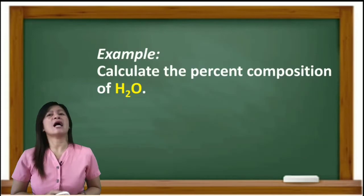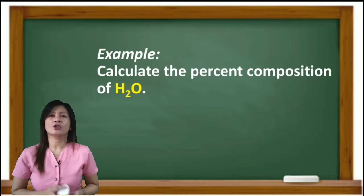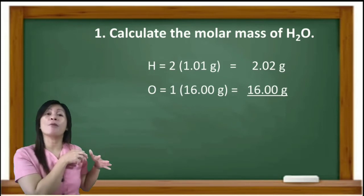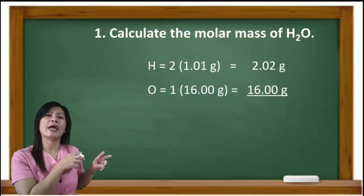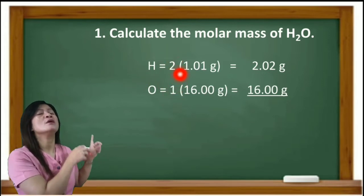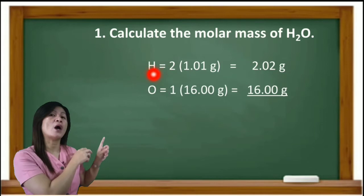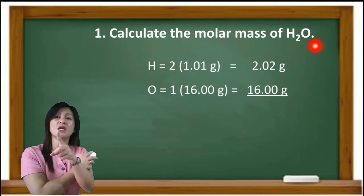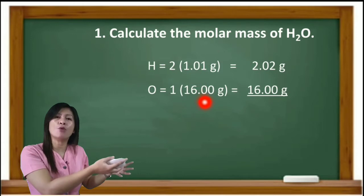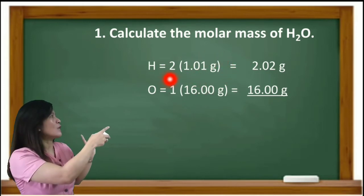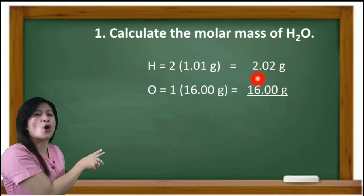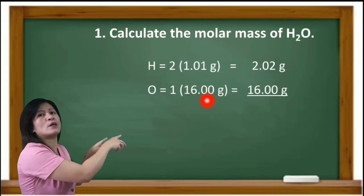Let's calculate the percent composition of water. Step one: calculate the molar mass of water. List down the elements present: hydrogen and oxygen. In one mole of water, we have two hydrogen atoms as indicated by the subscript and one oxygen atom. Multiply by their respective atomic masses from the periodic table. For hydrogen: 2 atoms × 1.01 g = 2.02 g. For oxygen: 1 atom × 16 g = 16 g.